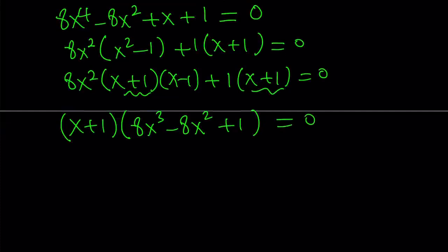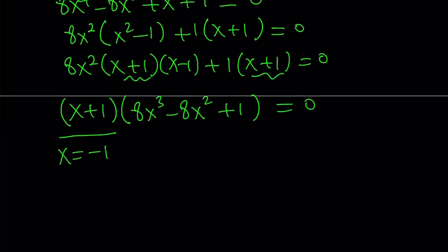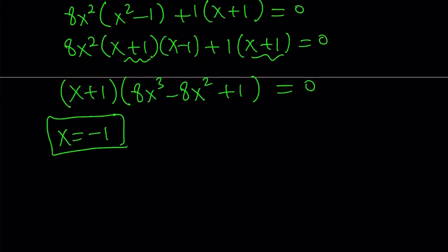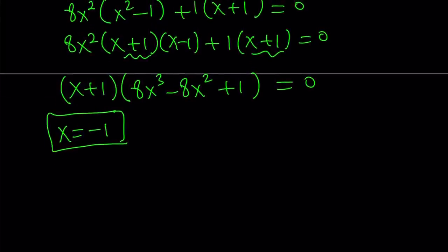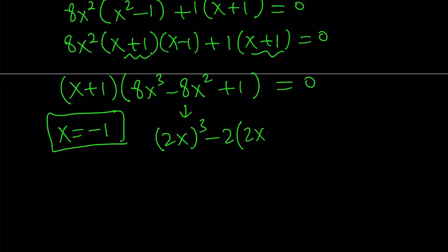From here we get the obvious solution x equals negative 1. The other factor is a cubic, and even though it looks hard to solve, it's actually easy because it has 8x cubed and we can change the variable to make it a monic polynomial — meaning the leading coefficient is 1. So we can write this as (2x)³ minus 2(2x)² plus 1 equals 0.